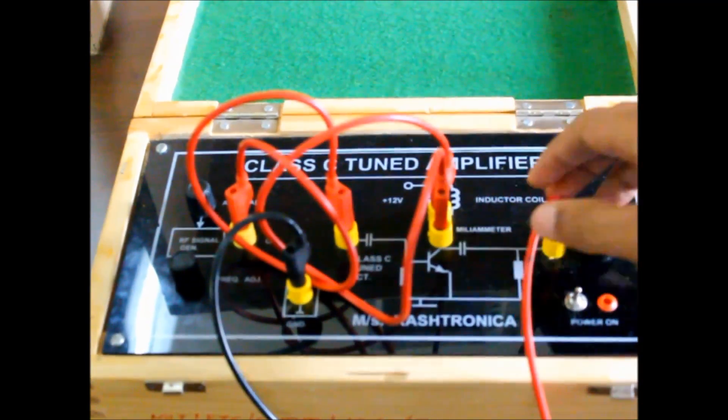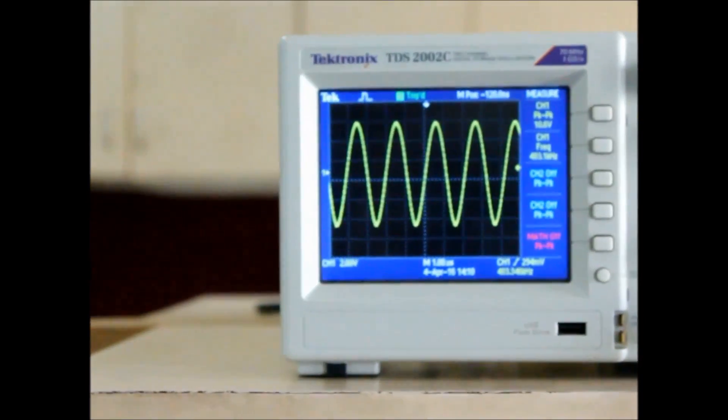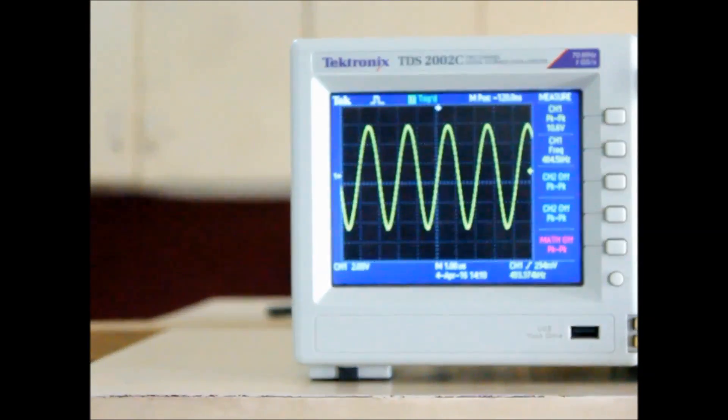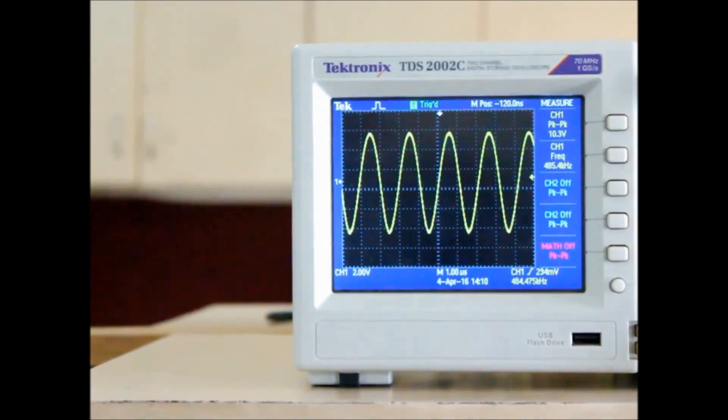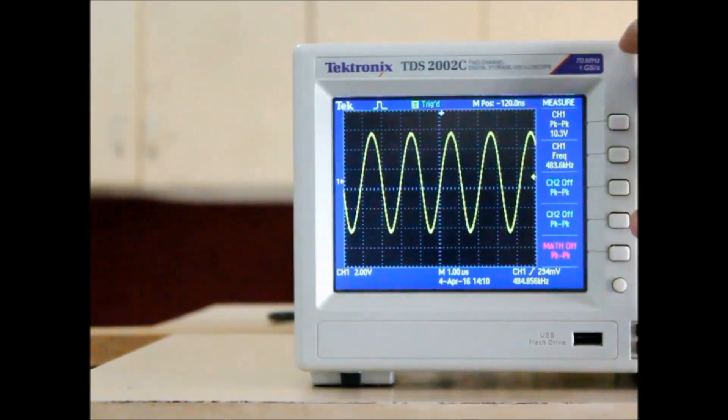And take the voltage readings on DSO. So again, the same: take three to four readings of the frequencies and voltage. Voltage here is peak-to-peak again, so you will have to divide it by two.